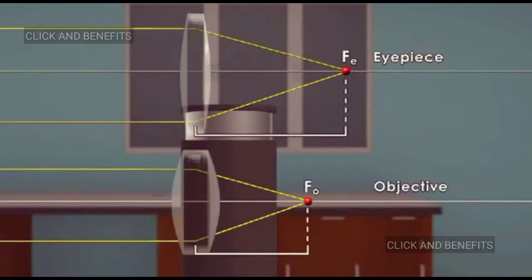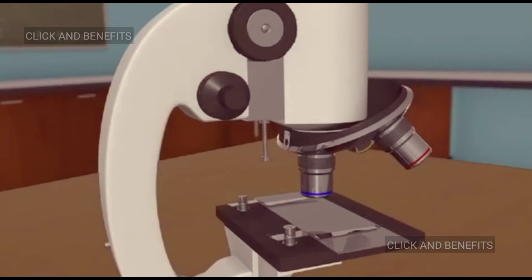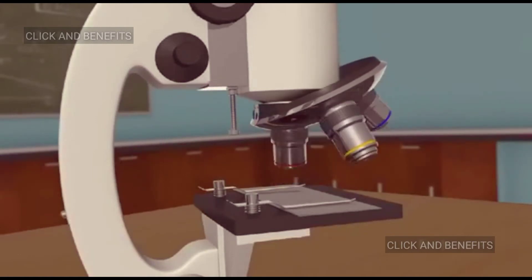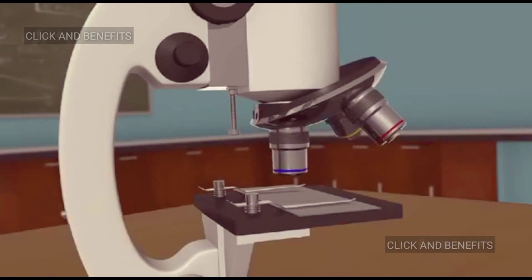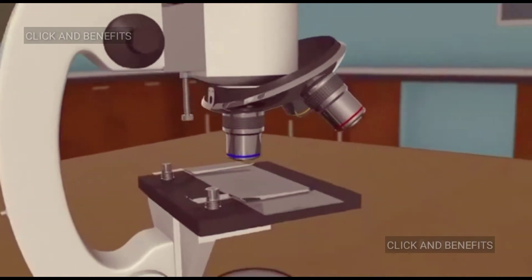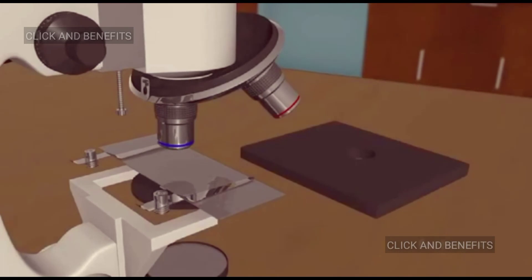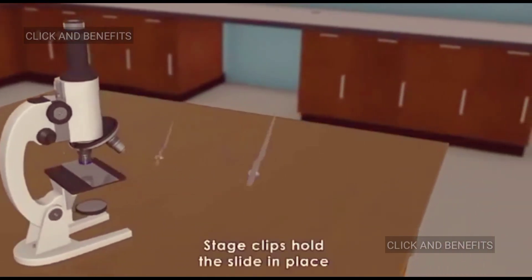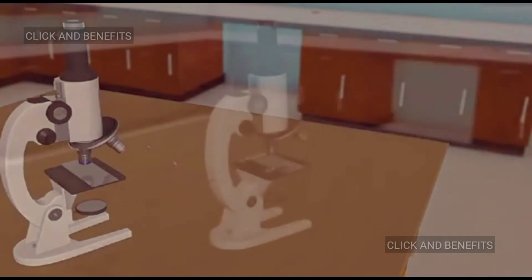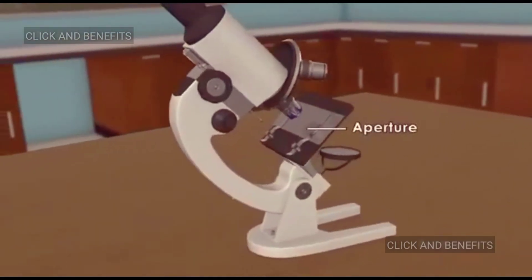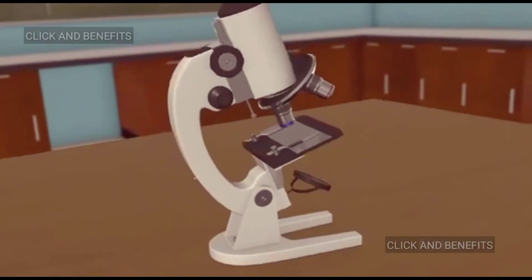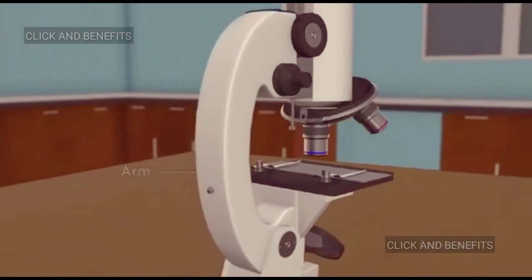Although the eyepiece also has a short focal length fe, it is still greater than the focal length of the objective. A revolving nose piece known as a turret is attached to the lower end of the objective. The turret can be rotated to change the power magnification as necessary. Below the objective sits a flat platform known as the stage. On the surface of the stage, two stage clips hold the slide in place. A small aperture is present in the stage allowing light into the body.